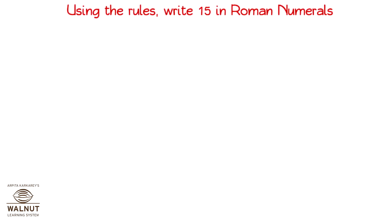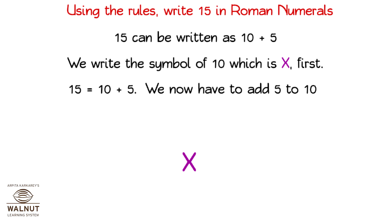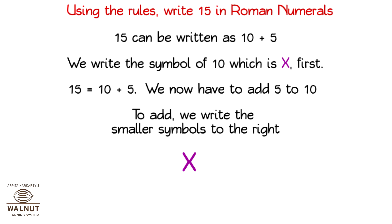Using the rules, write 15 in Roman numerals. 15 can be written as 10 plus 5. We write the symbol of 10, which is X, first. We now have to add 5 to 10. To add, we write the smaller symbols to the right. X followed by V. That is our answer.